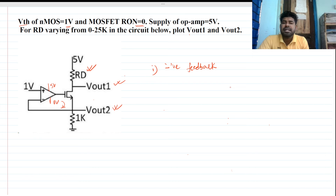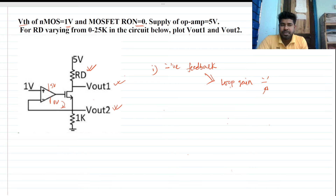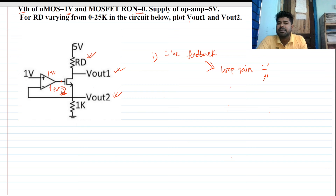To check for negative feedback, we can find the loop gain. To do this intuitively, we cut a high-impedance node and traverse the loop, checking whether the voltage at the cut node is negative or positive. We can cut this node at the gate of the MOSFET, and if we increase the voltage at this gate, we observe what happens.